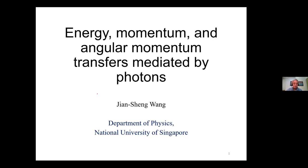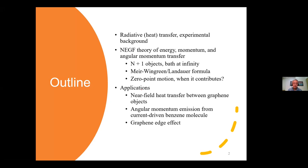The title of my talk today is about transport or transfer, which involves three kinds of conserved quantities: energy, momentum and angular momentum, and they are mediated by photons. I roughly break the talk into three parts. The first part is on radiative heat transfer and the experimental background. The bulk part of the talk is the NEGF — non-equilibrium Green's function theory — where I formulate a Meir-Wingreen-type theory for the transfer of all three quantities simultaneously.